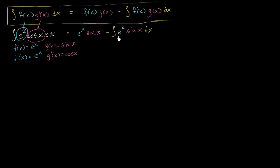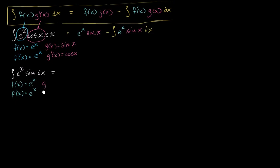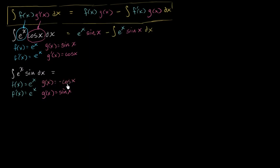Let's see if we can solve this new integral separately. If we're trying to find the antiderivative of e to the x sine of x dx, we can similarly set f of x equal to e to the x, so f prime of x is still e to the x. And we set g prime of x equal to sine of x, which means its antiderivative g of x is negative cosine of x, because the derivative of negative cosine is positive sine.